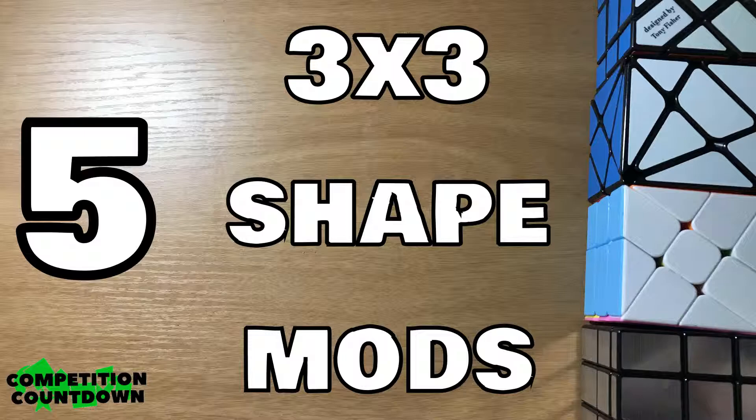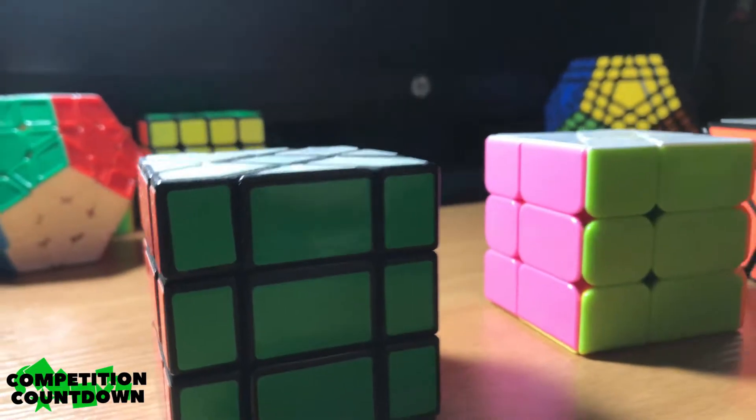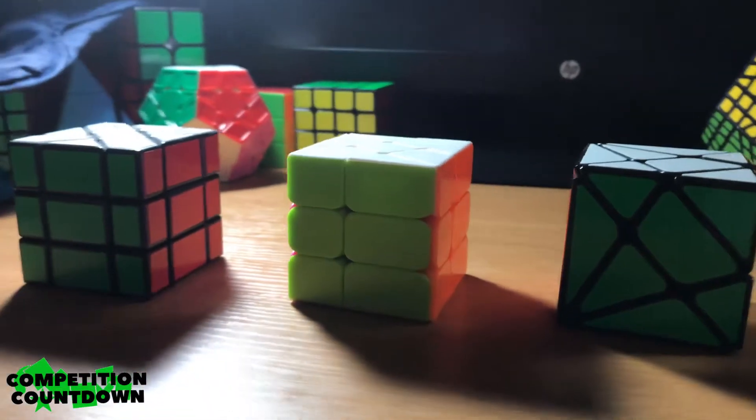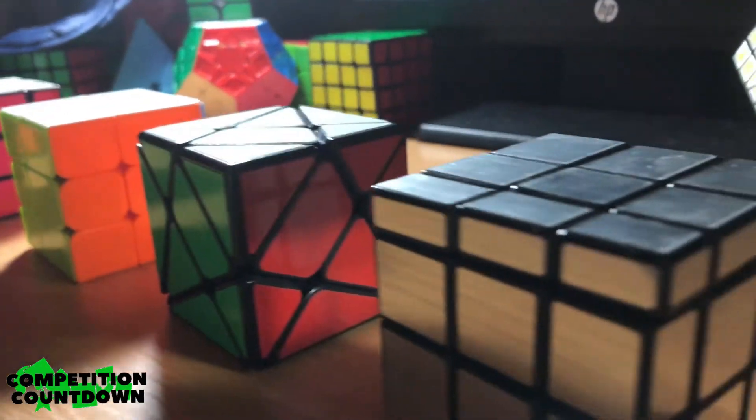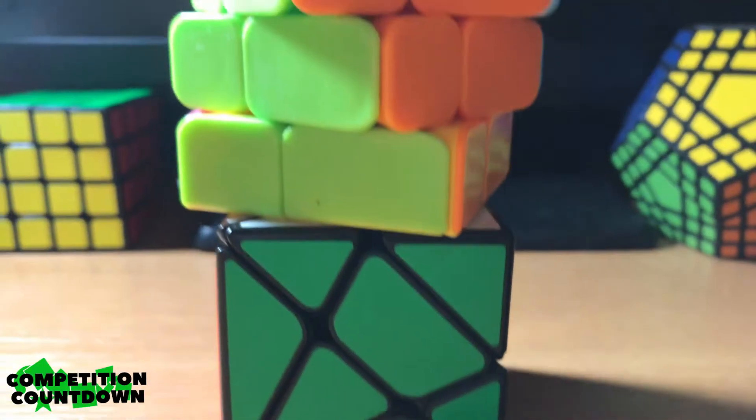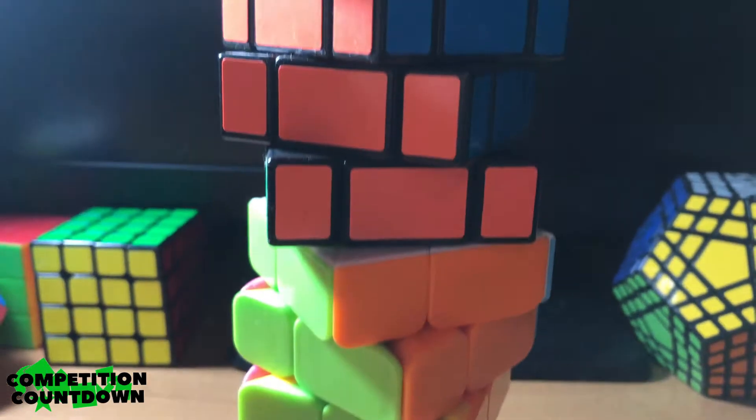Number 5 is 3x3 Shape Mods, especially the Fisher Cube, Axis Cube, Windmill Cube, and Mirror Blocks. These would make okay events but are just variations of the 3x3 and are solved in the exact same way as the 3x3.